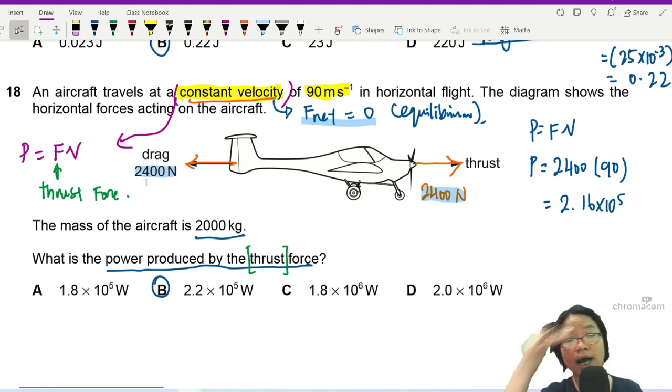So don't be alarmed too much about this kind of P equal to FV question. So for context, power is equal to force times velocity can only be used if the velocity is constant.